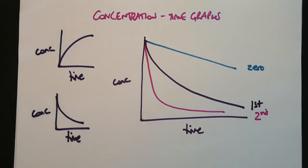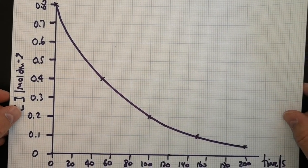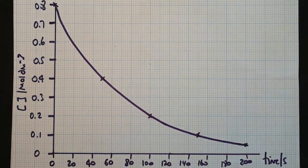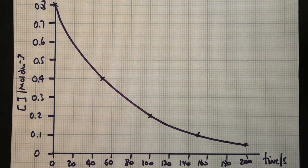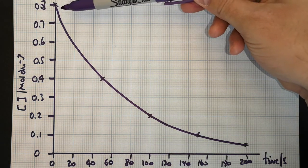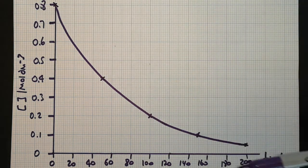Right, there's something else about first-order reagents that you need to be aware of. So here is a more detailed graph of the use of a first-order reagent. So you should be able to see that the concentration at the beginning of the reaction is 0.8 mol per decimeter cubed, and then it decreases as time progresses.